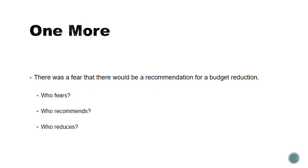Here's one more example — the ultimate bad revision: 'There was a fear that there would be a recommendation for a budget reduction.' That is a grammatically correct sentence and it does convey some of the ideas from the clearest version, but notice just how hard it is to understand what's happening. The actions are hidden in nominalizations, and now we don't even have the actors at all. Who has this fear? Who is making this recommendation? Who is making the reduction? None of these are stated, making it very hard to know what's being communicated — the ultimate example of how characters can be obscured to make a sentence almost meaningless.